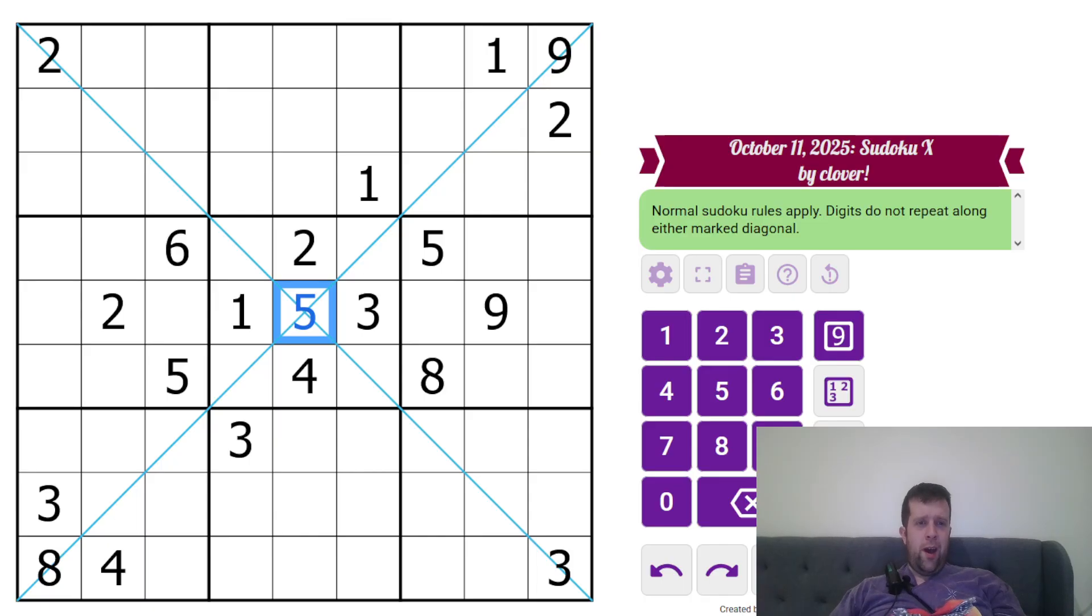Now, what else am I seeing? It's this 8 means that, because this is 6, 7, 8, 9 along here. 8 can't go on that cell or that cell via the diagonal, and 8 can't go there, so that has to be 8. Where does 9 go? 9 can't go along this diagonal, so 9 has to go there. And this 6 is gonna fully unwind that diagonal.